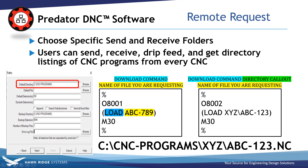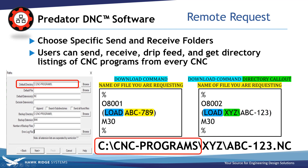You can also use this with a directory callout. In this example you have the load command just like before. This uses the machine's default directory — that would be the red section — and adds the subdirectory to that. The green section is the subfolder and the yellow section is the file name.